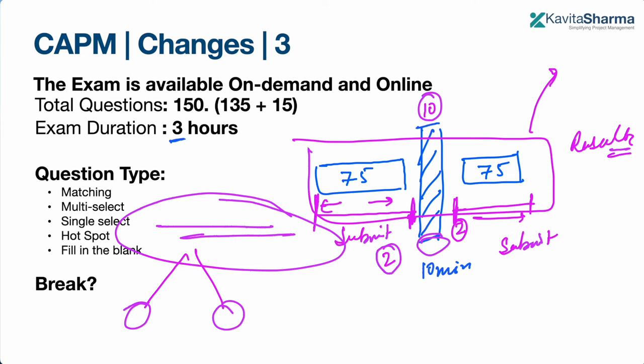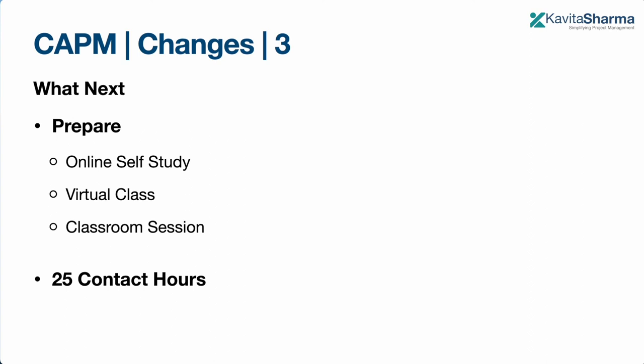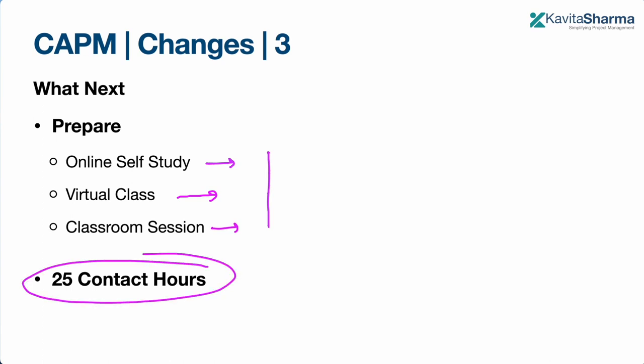For preparation, you can choose any mode — online self-study, PMI as a provider, or any ATP. You can also opt for a virtual class or a classroom session based on your preference. The key eligibility is getting those 23 contact hours. Once you have those, you can file the CAPM application and prepare for and pass the exam.